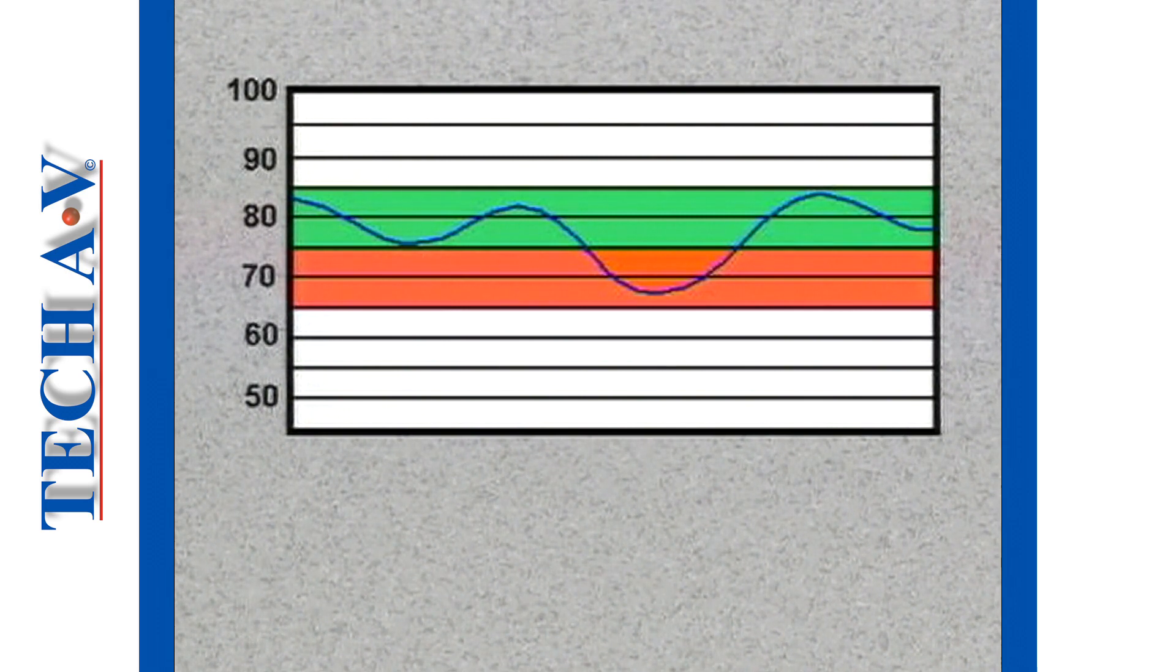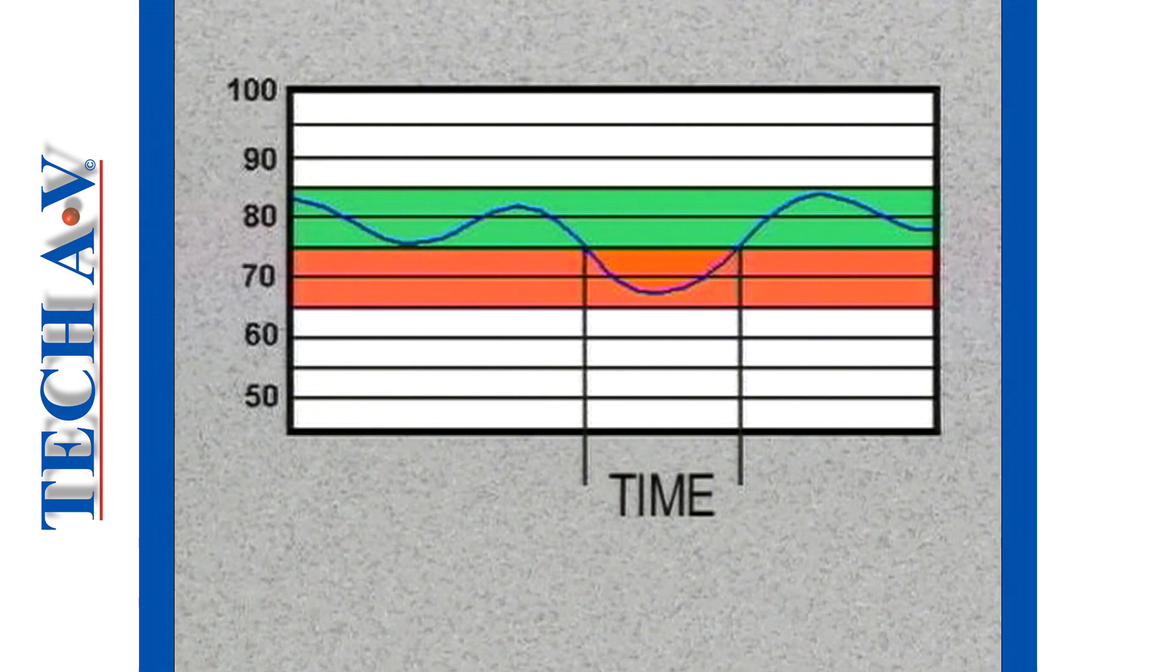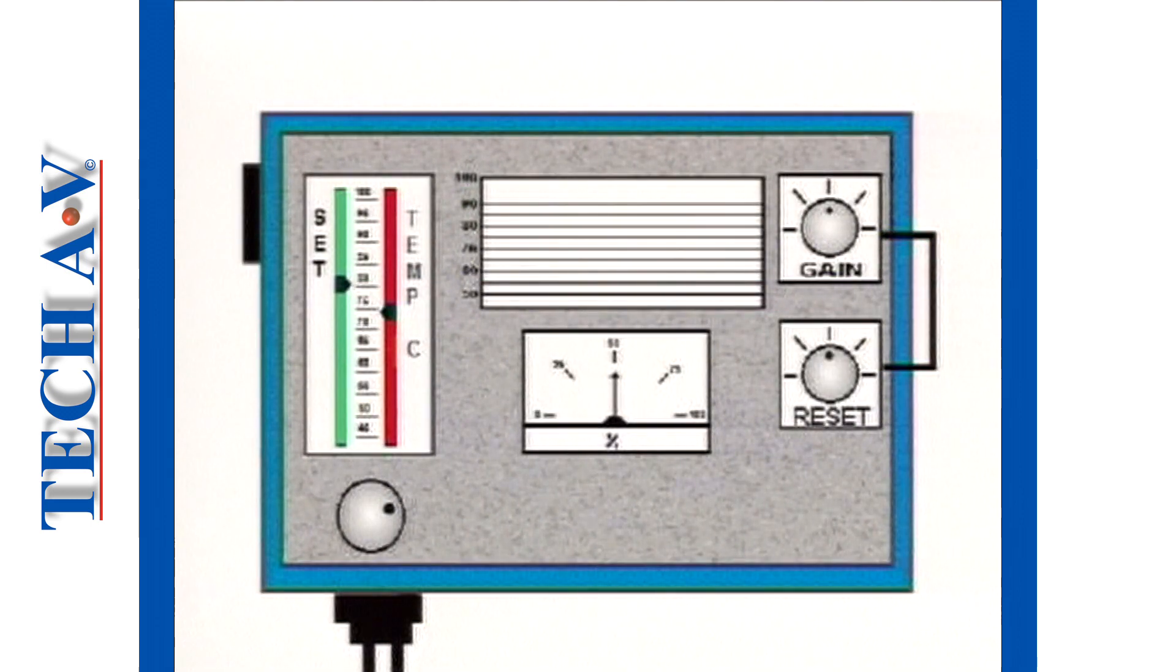An integral action control unit responds to error in a similar way to the proportional unit, but the difference is that integral action monitors the error over a period of time. When a temperature drop occurs, as a result of load change, the integral action unit detects the error, monitors it over a time period, and then resets the proportional action unit in order to correct the error. An integral action unit makes frequent checks on the performance of the proportional action unit, resetting it whenever necessary. The frequency of the reset action may be adjusted in terms of repeats per minute or minutes per repeat.